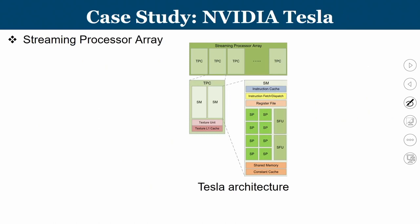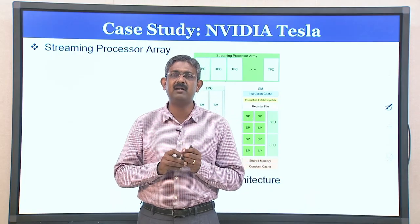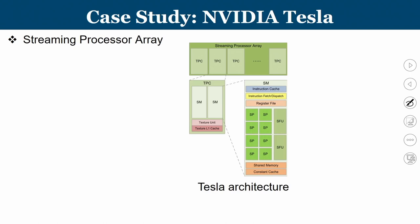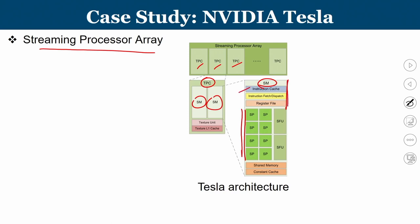Now let us look at case studies, starting with the popular NVIDIA GPU series. There are many GPU architectures from NVIDIA, and we have learned some fundamental architectural features. Starting with NVIDIA Tesla — a streaming processor array — it consists of multiple TPCs, each TPC containing multiple SMs (streaming multiprocessors), and internally streaming processors. Each SM has an instruction cache, instruction fetch/dispatch unit, register file, multiple streaming processors organized as lanes, and shared memory. There is also constant memory available.